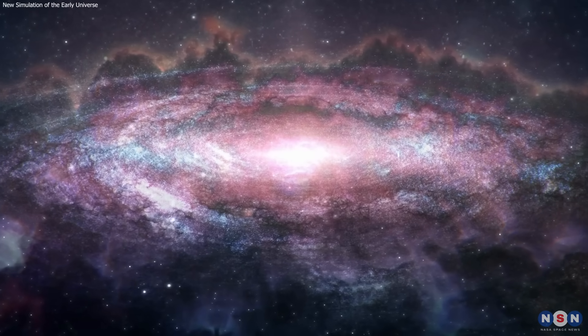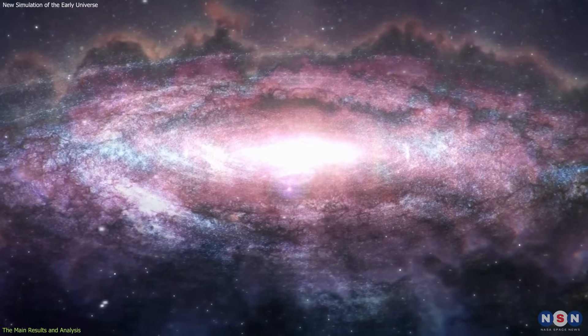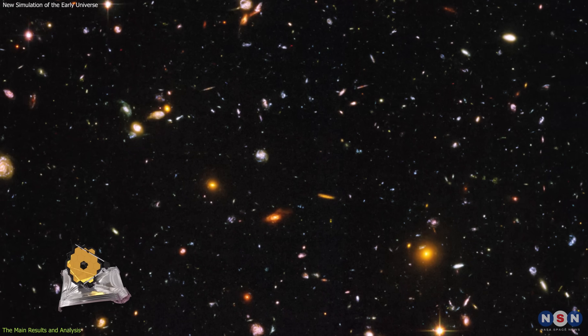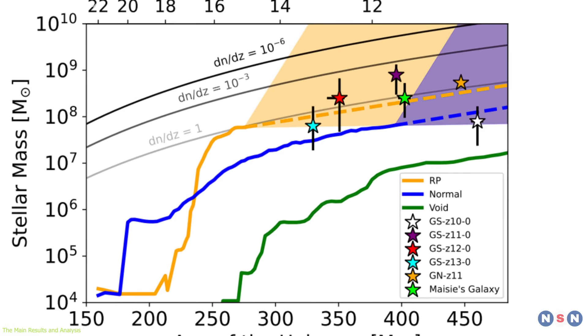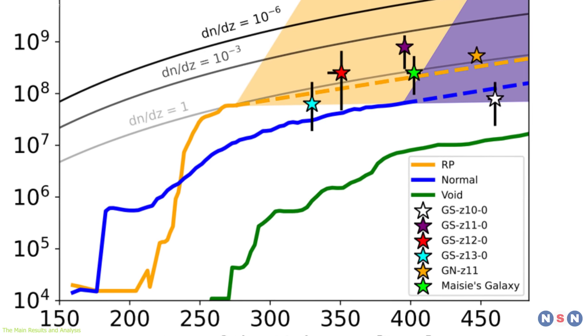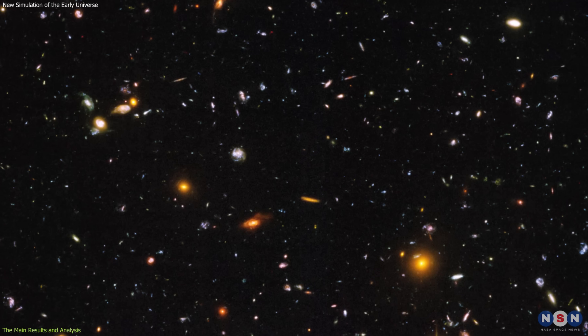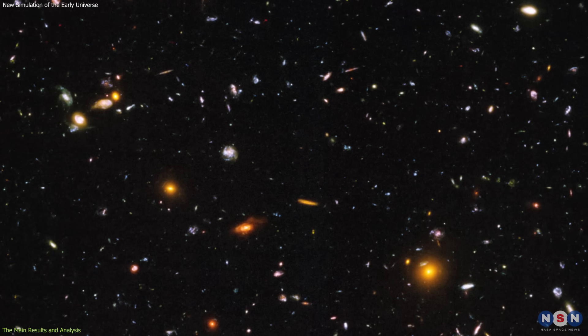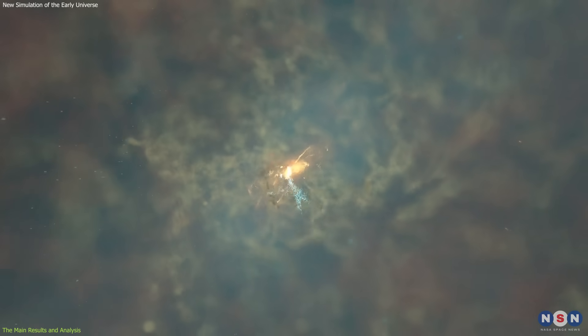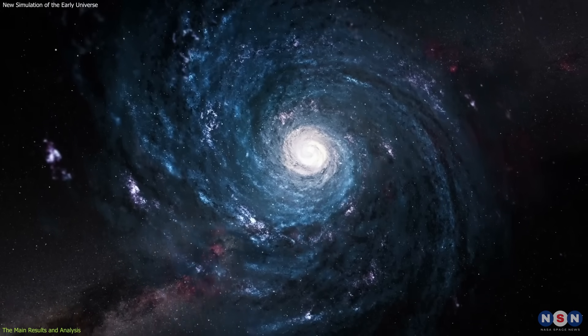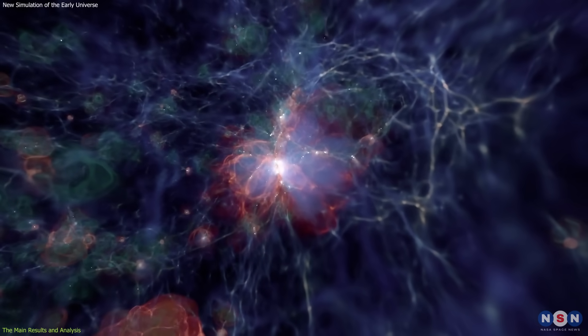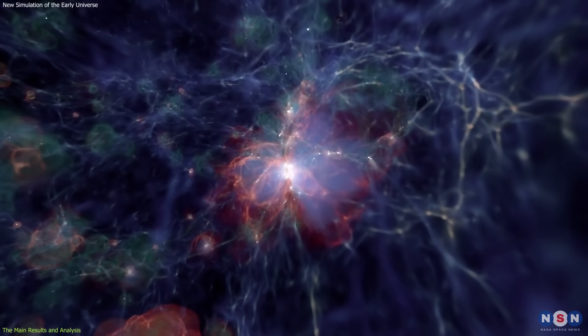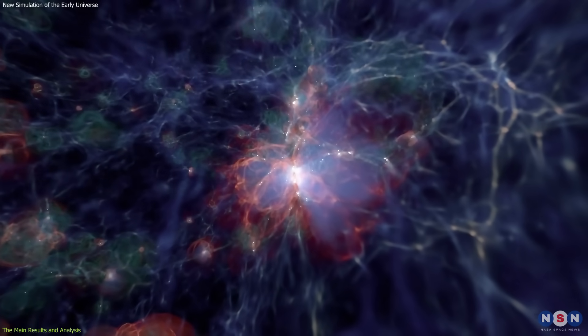So what are some of the main results and analyses that come out of this simulation? Well, one of the main findings is that the first galaxies studied by James Webb are consistent with theoretical expectations. This means that these galaxies are not anomalies or outliers, but rather typical examples of galaxy formation in the early universe. They are also not very different from later galaxies in terms of their basic properties. For example, they follow a similar relationship between mass and size as later galaxies do.